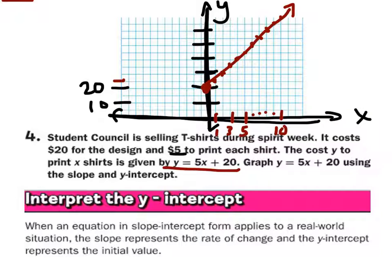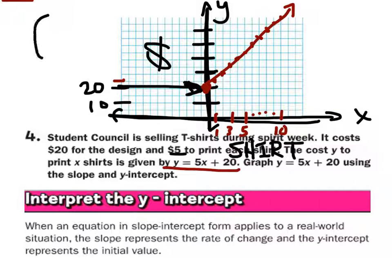I suppose I should label my axe eye as well. It's $5 per shirt. Notice we do have to interpret the y-intercept. Look, if we read the problem, it will tell us. The y-intercept is 0, 20. So, all we've got to do is find where it says 20. Well, there it is. $20 for the design. That's my interpretation.